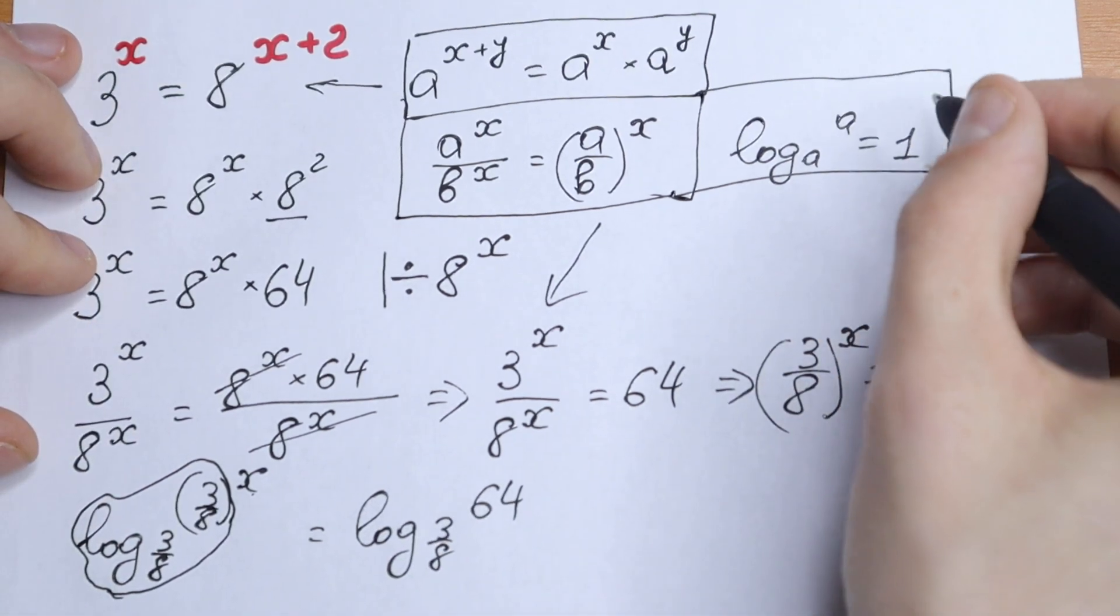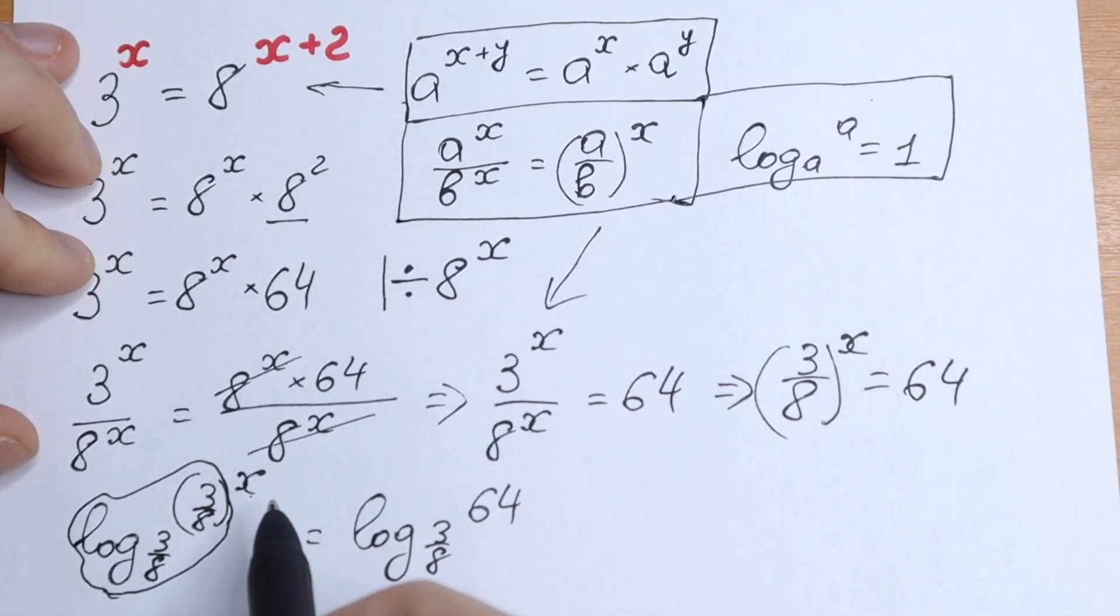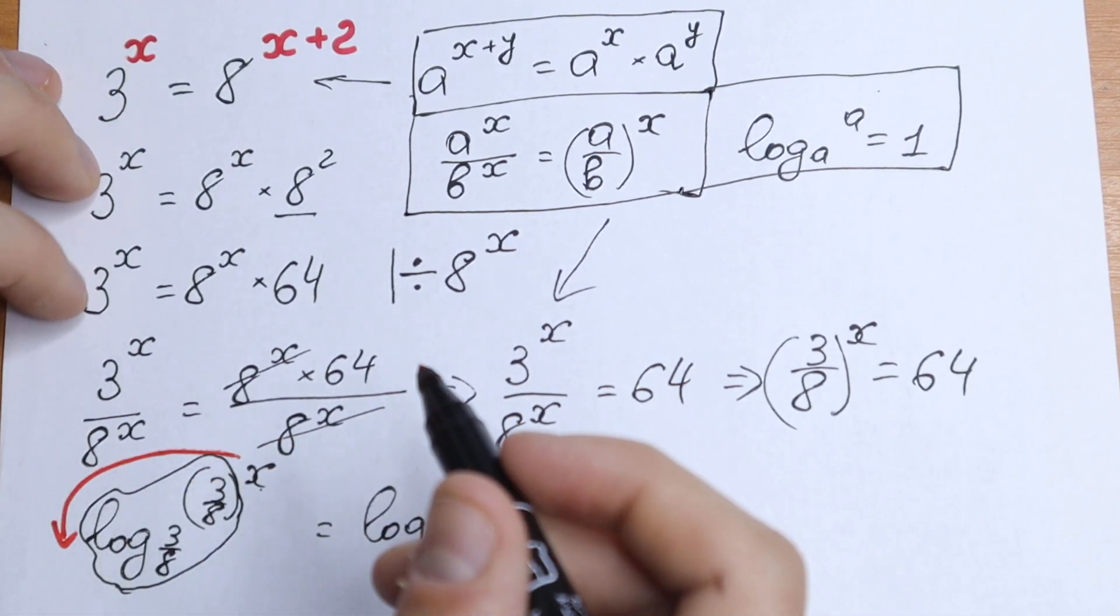And moreover, if you have a power right here, this power jumps in the beginning. So right here, this x jumps in the beginning, right here, behind this log.